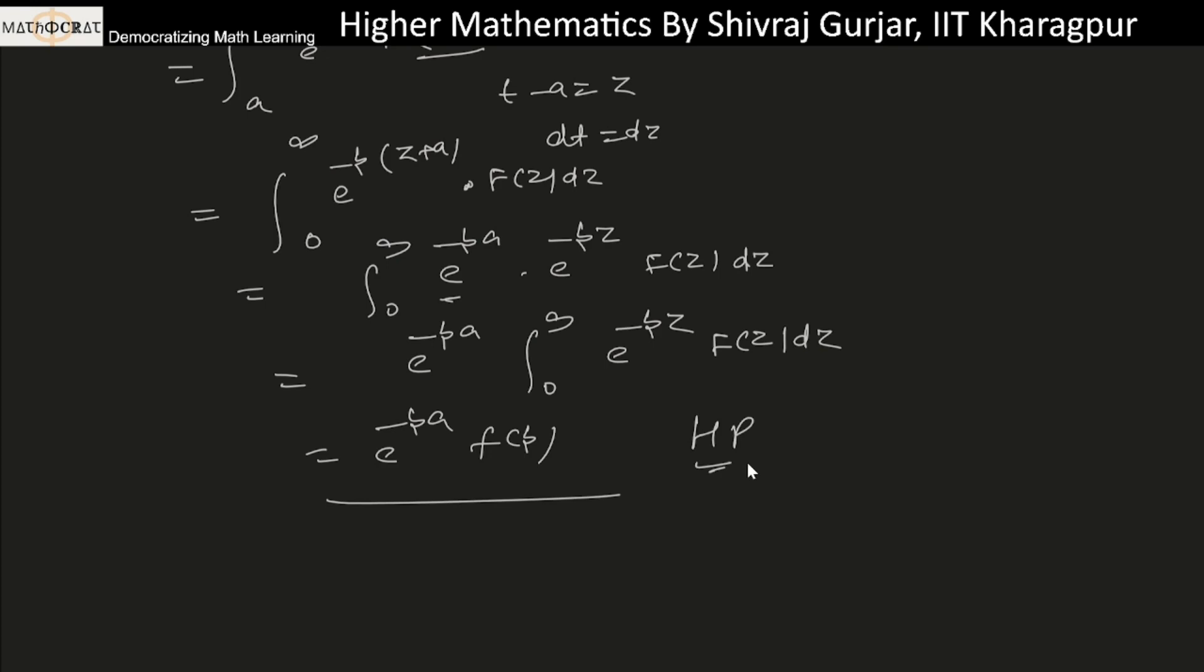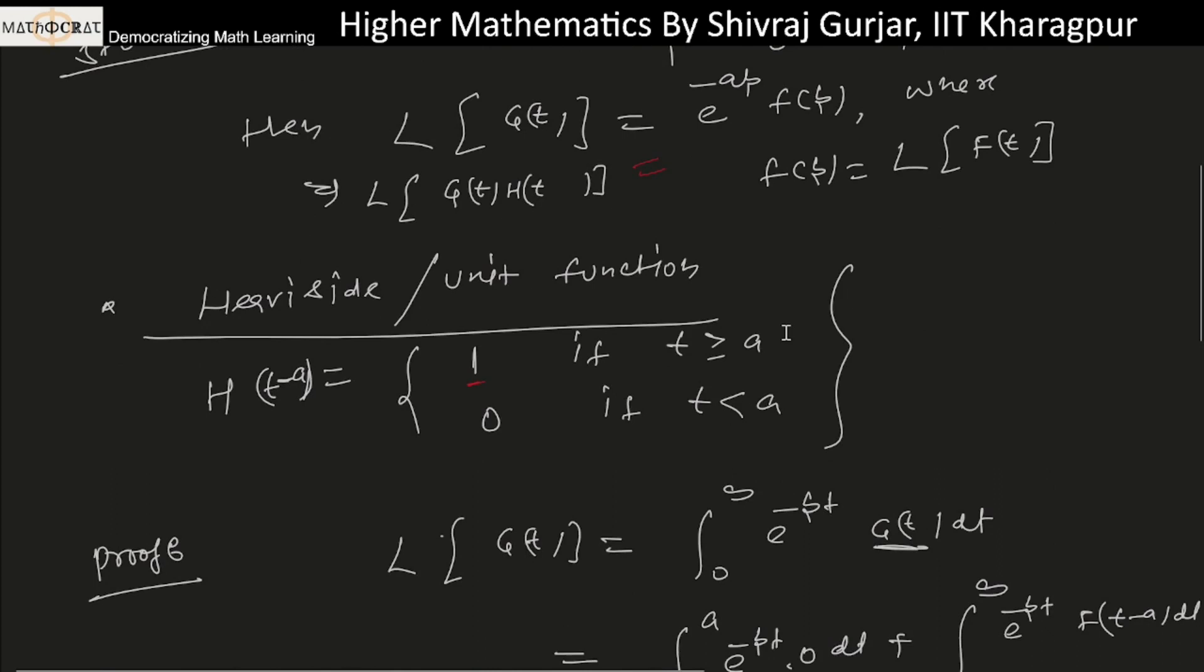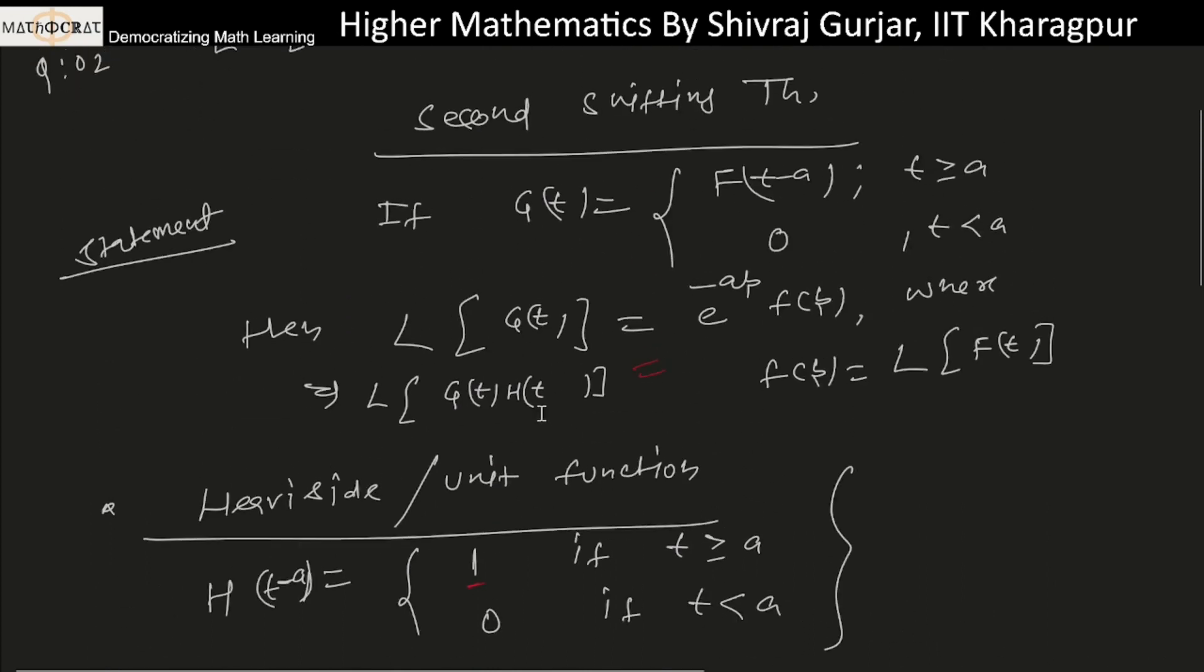And this is the second shifting theorem: e^(-pa) F(p). So this is how the Heaviside function works. g(t) gives us f(t-a) H(t-a), which equals e^(-pa) F(p). Same thing.